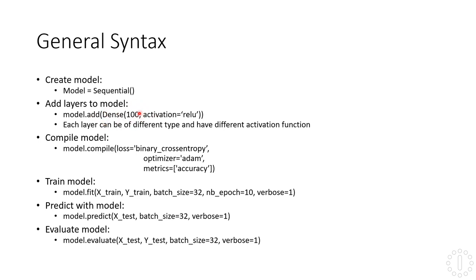After we've added all of the layers we want with their number of neurons and activations, we can compile the model using the compile method, in which we define which type of loss we want, the optimizer, and which metrics we want to compute. Then we can train the model using the fit function, passing the x and y training sets — the attributes and the target variable. We also split the set into batches of size 32, specify how many epochs we want to train for, and how much of the training process to print out.